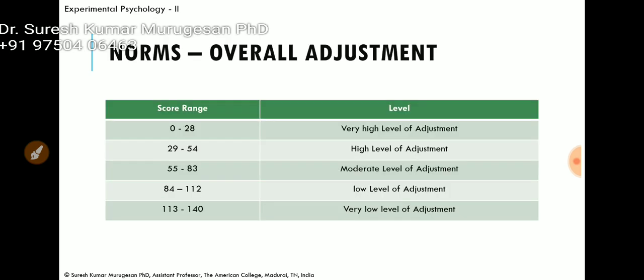For overall scores, the range is between 0 and 140. A score between 0 and 28 indicates a very high level of adjustment — lesser the score, higher the adjustment. A score between 29 and 54 indicates high level of adjustment. A score between 55 and 83 indicates moderate level of adjustment. A score between 84 and 112 indicates low level of adjustment. And a score above 112 indicates very low level of adjustment.